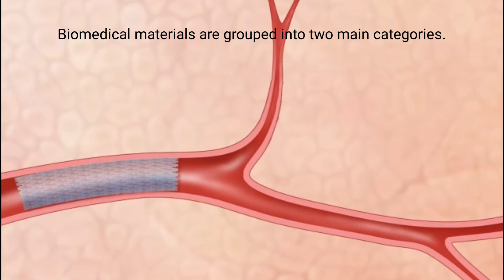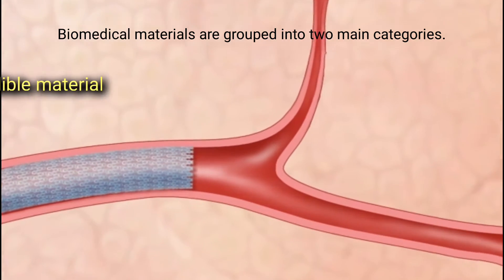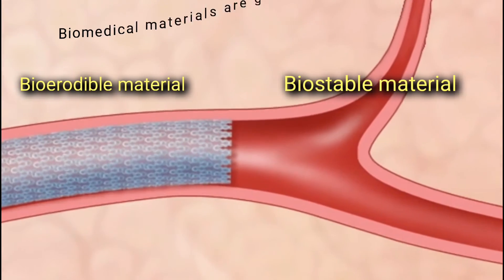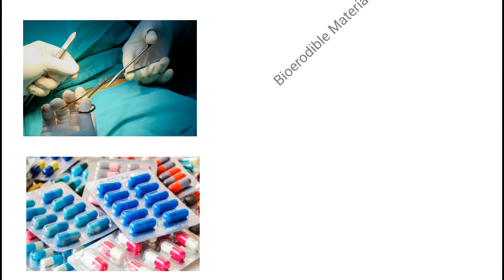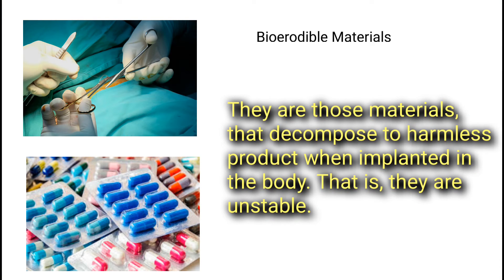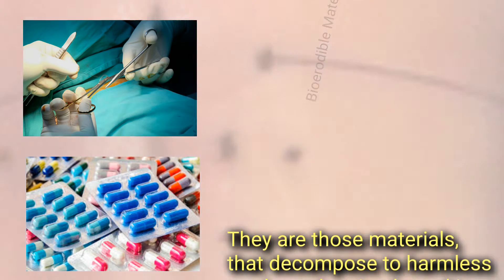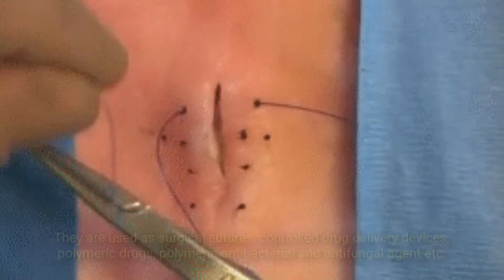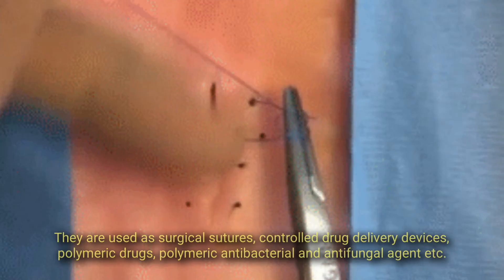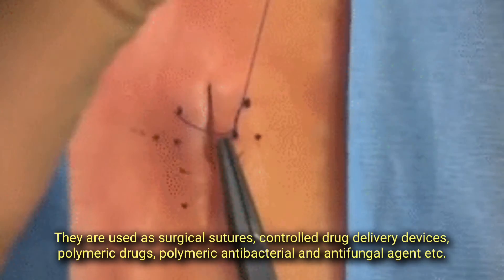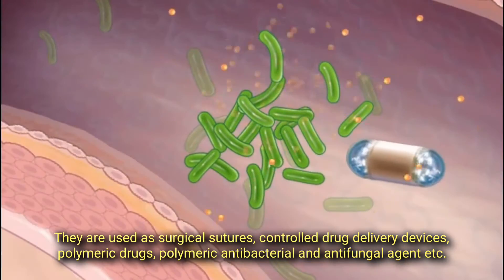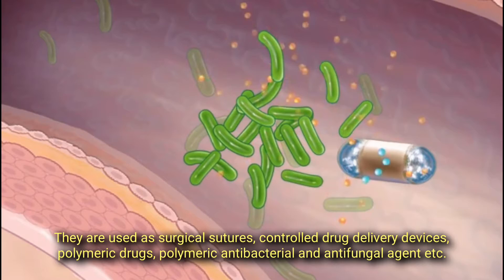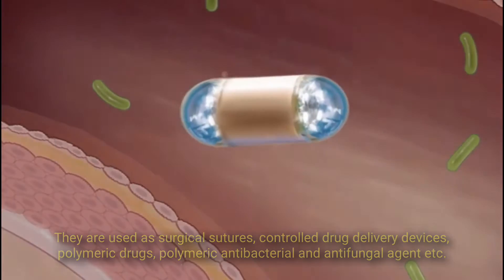Biomedical materials are grouped into two main categories: bioerodible materials and biostable materials. Bioerodible materials are those that decompose to harmless products when implanted in the body — they are unstable. They are used as surgical sutures, controlled drug delivery devices, polymeric drugs, polymeric antibacterial and antifungal agents, etc.